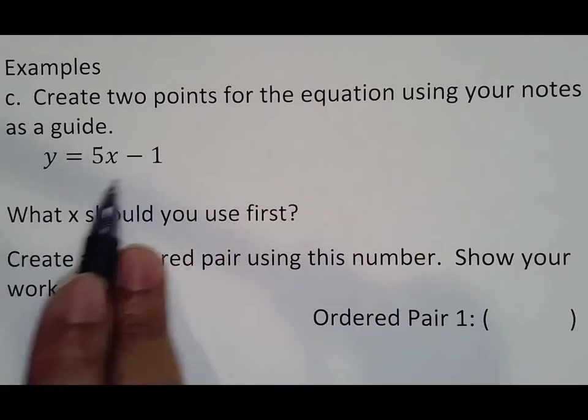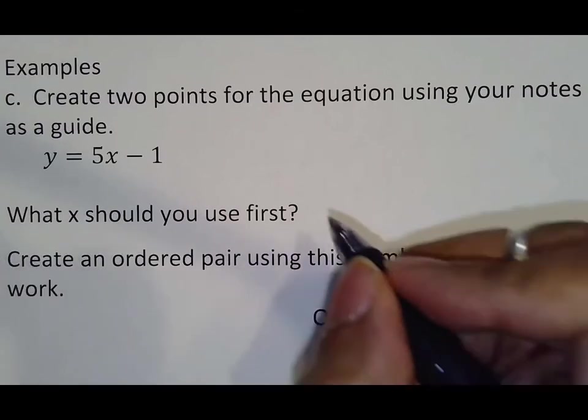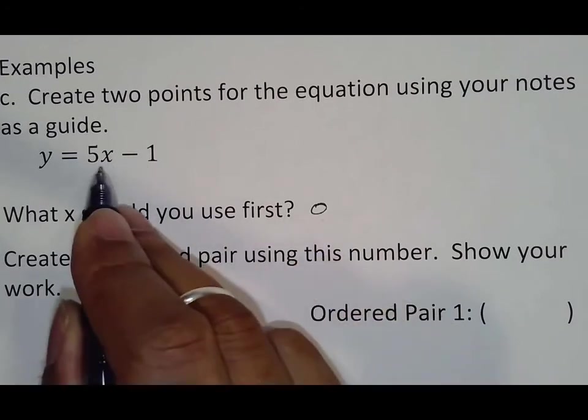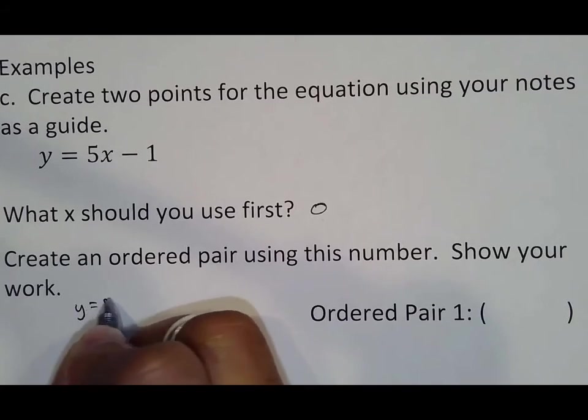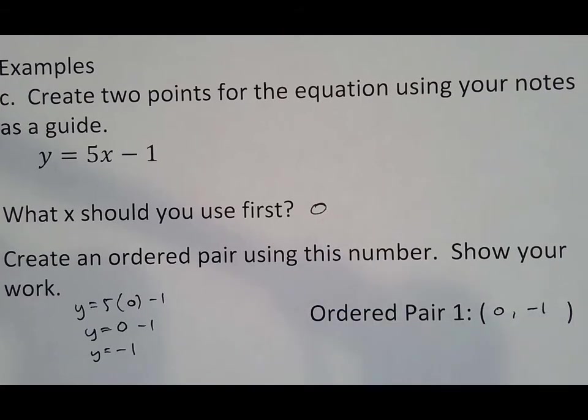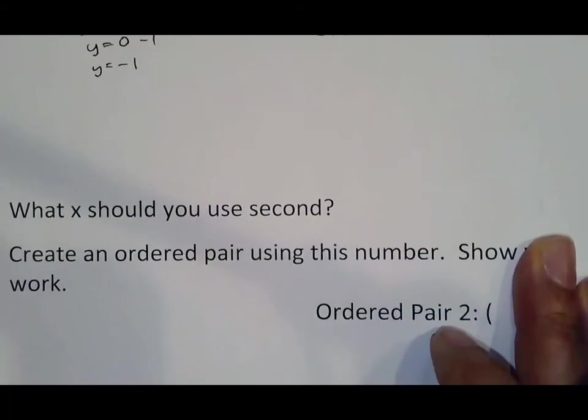Again, hopefully you're copying at least one of these down. What x should you use first is zero. Create an ordered pair using this number. So again, we take the zero, plug it in for x. So it's y equals five times zero minus one, which means it's y equals zero minus one. Remember, all that happens is zero goes away because it's nothing, giving us a negative one, which means my first point is zero comma negative one. Or you could use your calculator and type zero minus one. But whatever you do, just make sure you understand how to get that negative one.